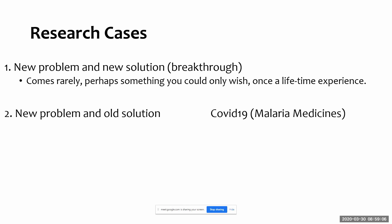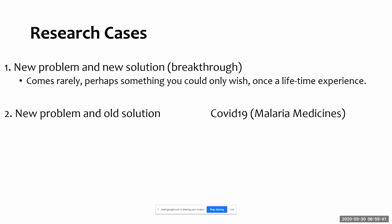Case number two is new problem, old solution. You see there's a new problem in the world and you bring an old solution for it. For instance, COVID-19 — it's a new type of virus, nobody has seen it before, but because there's no vaccine for it people are trying old solutions. The current medicines people are trying are medicines from malaria, cold, or flu. New problem, old solution — you can come with that and this one is fine to do.